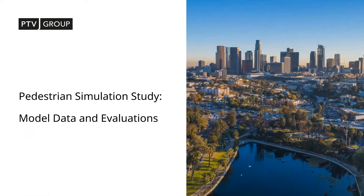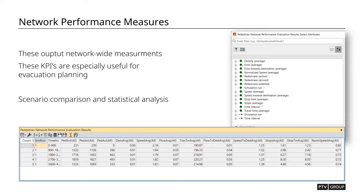The final topic is what type of data you pull out of a pedestrian network and why. The first is network performance measures, which are similar to the network performance measures you get in VSIM from the vehicle side. These show network-wide measurements and are useful for things like evacuation planning.